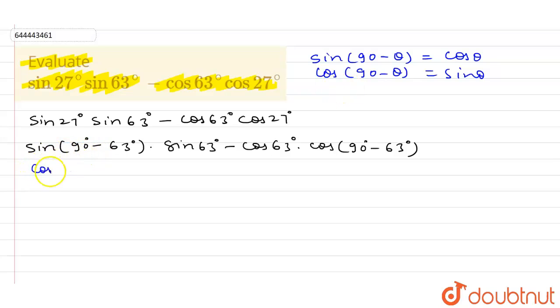Cos of 63 degree into sin 63 degree minus cos 63 degree into sin 63 degree. Okay, so both of these get cancelled, so our answer is zero.